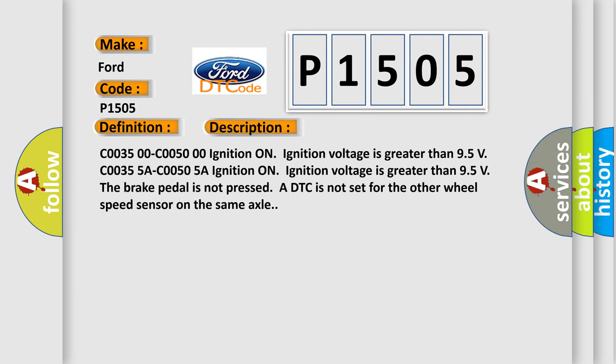This diagnostic error occurs most often in these cases: C0035 00 C0050 00 ignition on, ignition voltage is greater than 9.5 volts. C0035 5A C0050 5A ignition on, ignition voltage is greater than 9.5 volts. The brake pedal is not pressed. A DTC is not set for the other wheel speed sensor on the same axle.